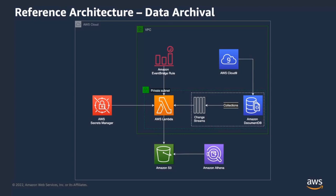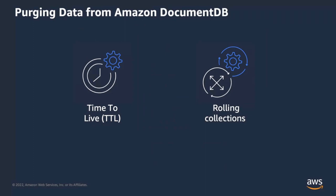If you have existing DocumentDB collections before you enable change streams, you may first want to use a utility like mongoexport — MongoDB compatibility kicks in here — to export your data from collections, store it in S3, then enable change streams and deploy this architecture. Once the data is archived to S3, you can query it using Athena or whatever preference you have for accessing data in S3. This solution focuses on moving data to S3.